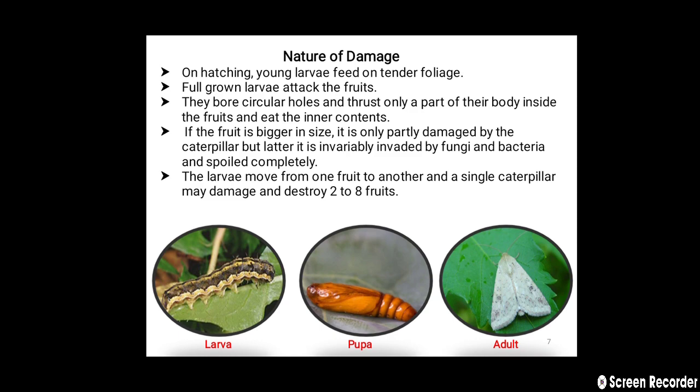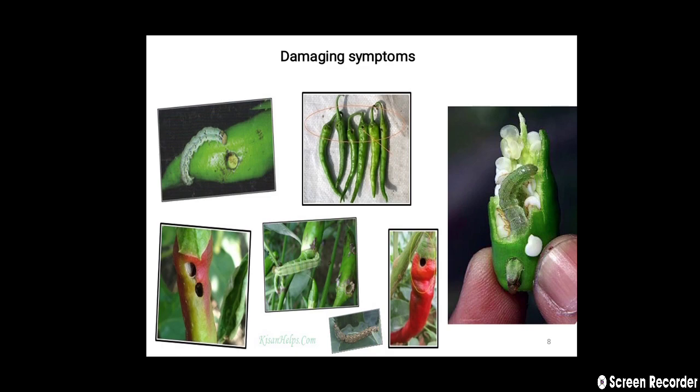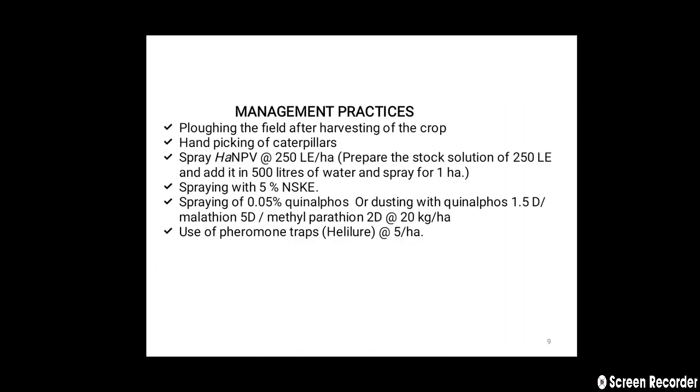In the image you can see different life stages of Helicoverpa armigera: larva, pupa, and adult. Also visible are the damaging symptoms on the fruit — bore holes and the larva feeding inside the fruit.